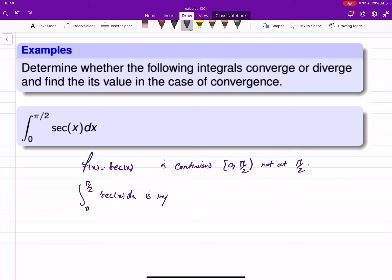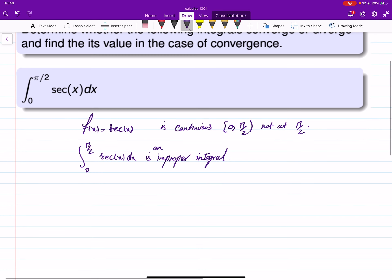So that means the integral is an improper integral, and we have to work with it very carefully. So here we go from zero to t first, and then find the limit of t as t goes to π/2 from the left hand side, so secant of x dx.